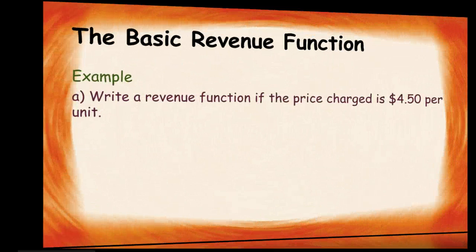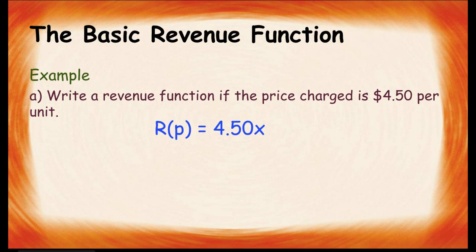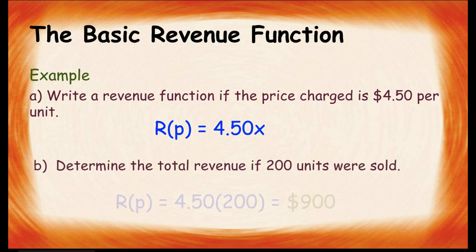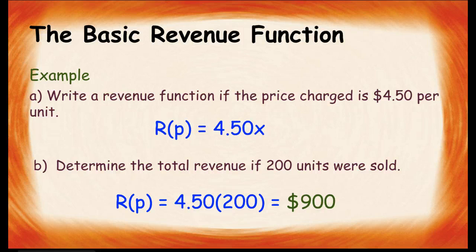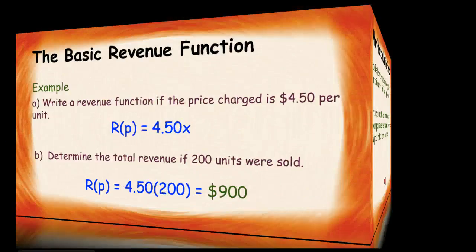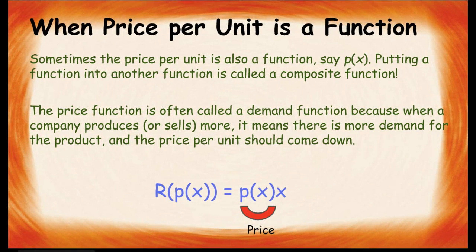Let's look at an example. Write a revenue function if the price charged is $4.50 per unit. Well, we would just write it as $4.50 times x, and if 200 units were sold, we would plug in the 200 units to get $900 as our total revenue. Very basic. Problem is, it's not really quite that simple.